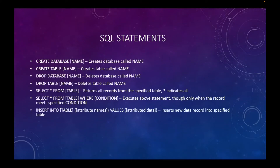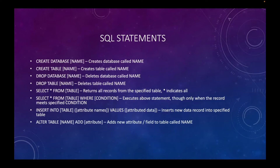'INSERT INTO table (attribute names) VALUES (attribute data)' is how you insert data into a database table. For a users table, you might say 'INSERT INTO users (first_name, last_name, age) VALUES (John, Smith, 40).' 'ALTER TABLE ADD attribute' adds new attributes to a table. 'DELETE FROM table' is interesting — it doesn't delete the table itself, just deletes all the records. So if your business is starting fresh, you get rid of all data records but keep the table.